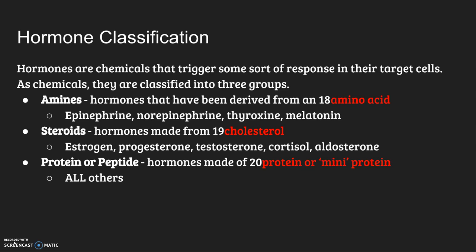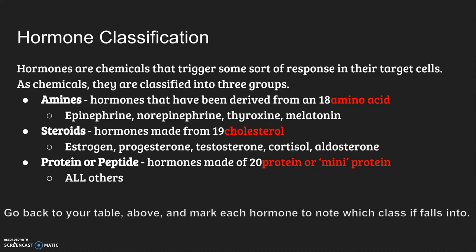Hormones are chemicals that trigger responses in target cells. As chemicals, they have classifications, and there are three groups. One group is called amines — hormones derived from an amino acid — and examples are epinephrine, norepinephrine, thyroxine, and melatonin. Another classification is steroids — hormones made from cholesterol — mostly your sex hormones and also cortisol and aldosterone. Proteins or peptides are hormones made of protein or mini-proteins, and that's all the others. Pause the tape, go back to your chart, and mark all of these as to which type of classification they are — an A for amine, an S for steroid, or a P for proteins or peptides.